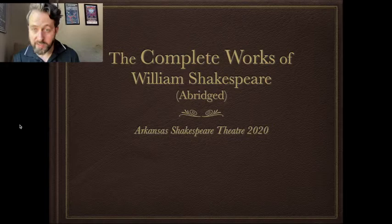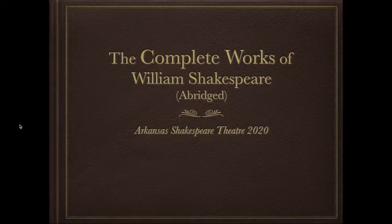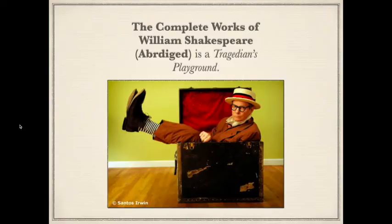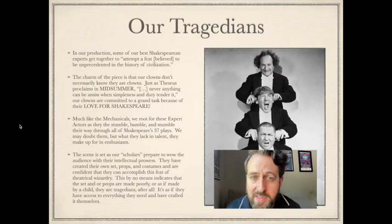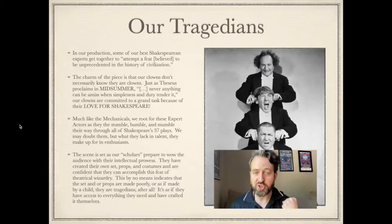This is my presentation for the Complete Works of William Shakespeare Abridged that was to be performed this summer. Unfortunately, this has had to be postponed because of the current situation. But we'll go through it quickly so you can see what a director might bring to a production meeting. First, you want to tell them what the concept is. The Complete Works of William Shakespeare Abridged is a tragedian's playground. The charm of this piece is that our clowns don't necessarily know they're clowns. Just as Theseus proclaims in Midsummer, 'never anything can be amiss when simpleness and duty tender it.' Our clowns are committed to a grand task because of their love for Shakespeare.